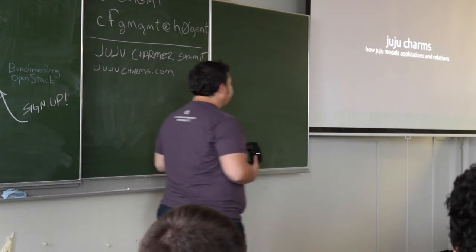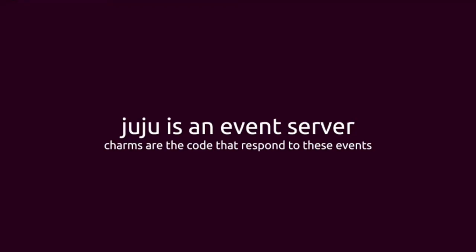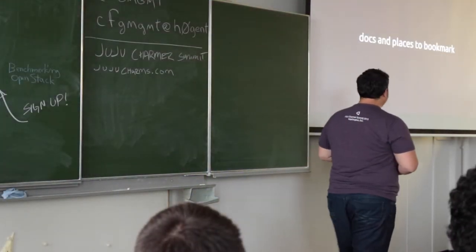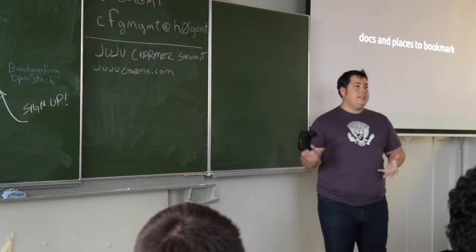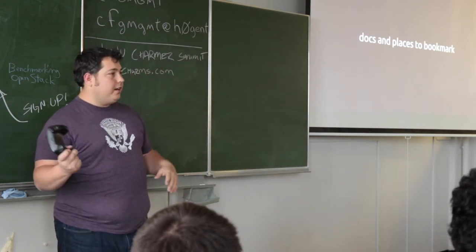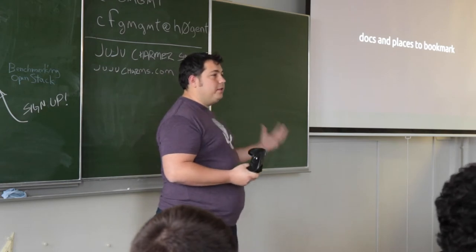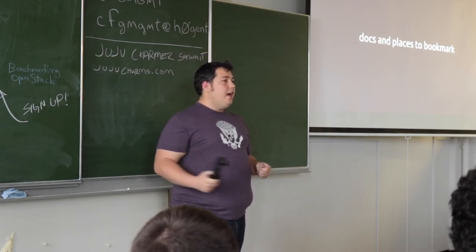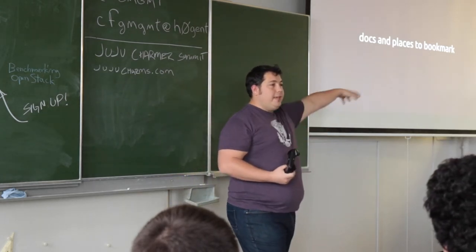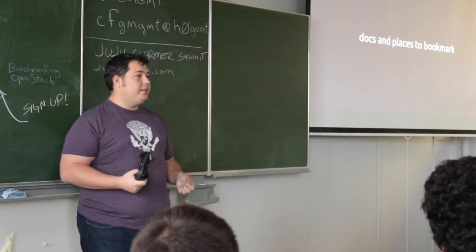By modeling at a higher level than a configuration management tool or a language, you get the ability to start tying these components together — they all just start speaking the model. Juju just becomes that model event server, pushing events up, and charms translate those events to whatever language, tooling, or primitive that you want to use. During this week's track, we'll be looking at what charms are and what they look like when they implement these different primitives in Python or Ansible.